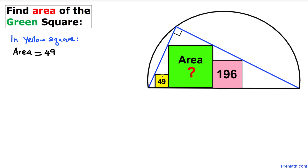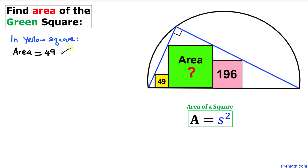Let's focus on the yellow square. We know that the area of this yellow square is 49. Recalling the area of a square formula — area equals s squared, where s represents the side length — since the area is 49, the side length of this yellow square is going to be 7. So all four sides are 7.